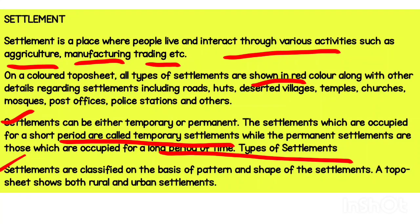Settlement can also be classified on the basis of pattern and shape. A topographical map shows both rural and urban settlements. The settlement which develops in a rural area is called rural settlement. In urban areas, where every facility is available and people live in urban places, it is called urban settlement.